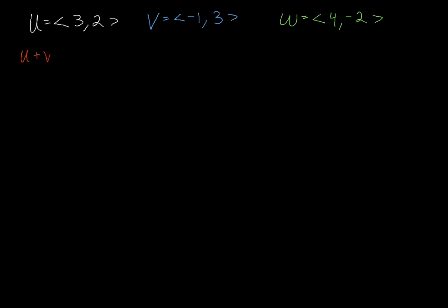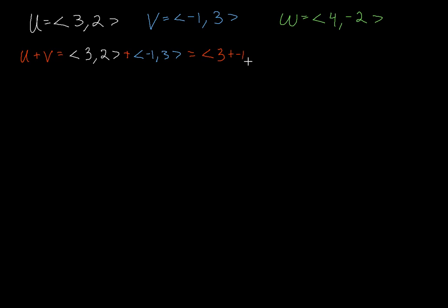Let's start by doing u plus v. If these were just regular old numbers, we could just add straight across and call it a day. But because they're vectors, we need to make sure to keep track of them in component form. I'm going to write u here, and then v, and then add them. My final resultant vector is going to be the x component of u — 3 — plus the x component of v, so plus negative 1. And this will be the x component of my resultant.